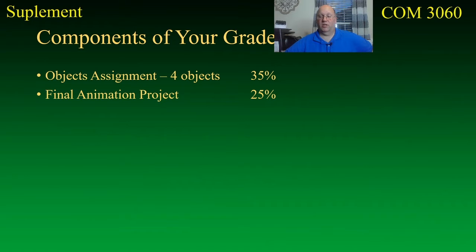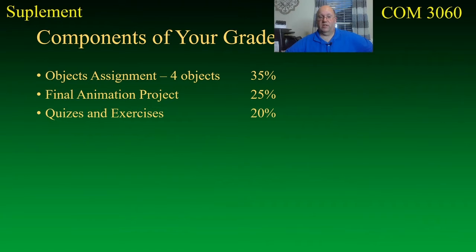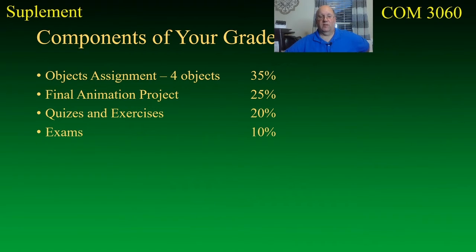The final animation project is worth 25% and it's related to the objects assignment in that the objects you create can be used in the final animation, but they don't have to be the only objects you use. Quizzes and exercises come to 20% — the exercise portion being the weekly assignments collectively. They're not incredibly highly weighted but still important. The exams are 10% each.